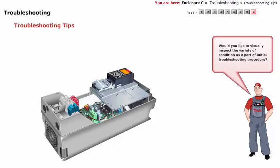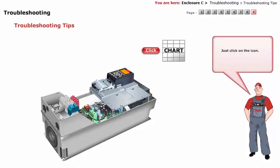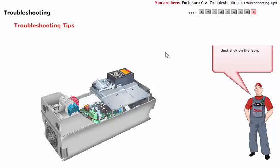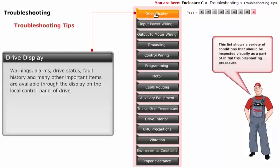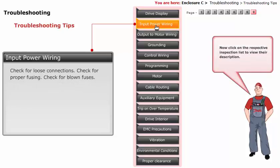Would you like to visually inspect a variety of conditions as part of the initial troubleshooting procedure? Just click on the icon. This list shows a variety of conditions that should be inspected visually as part of the initial troubleshooting procedure. Click on the respective inspection list to view their description, then click the play button to continue.